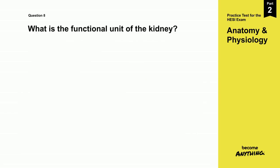Question 8. What is the functional unit of the kidney? A. Alveoli. B. Neuron. C. Nephron. D. Myofibril.